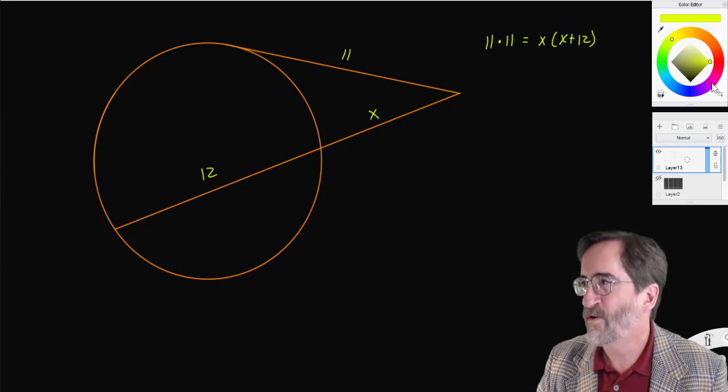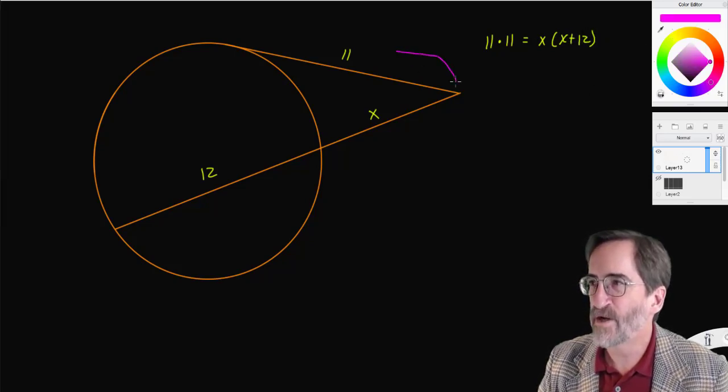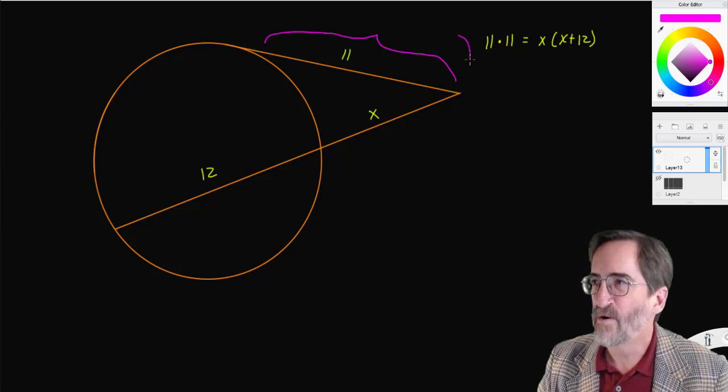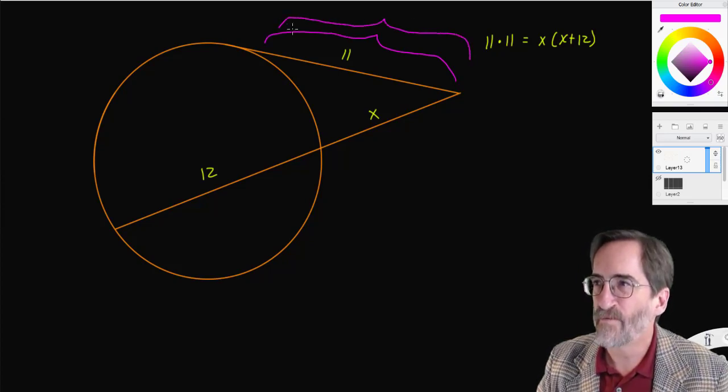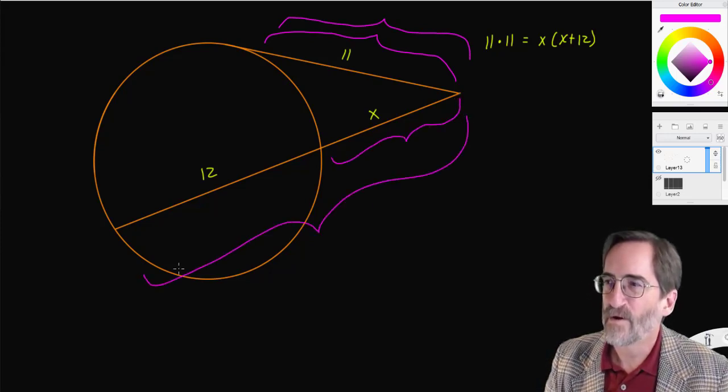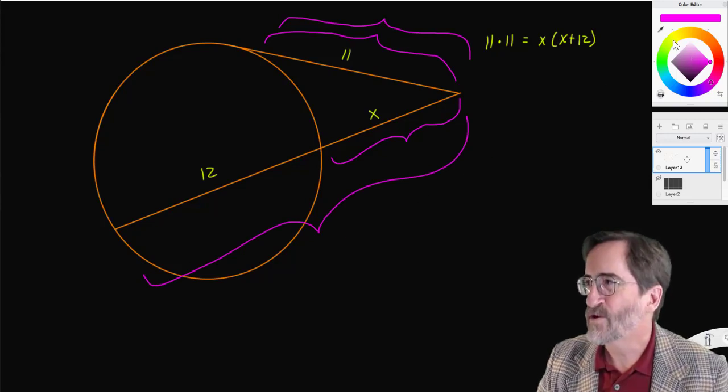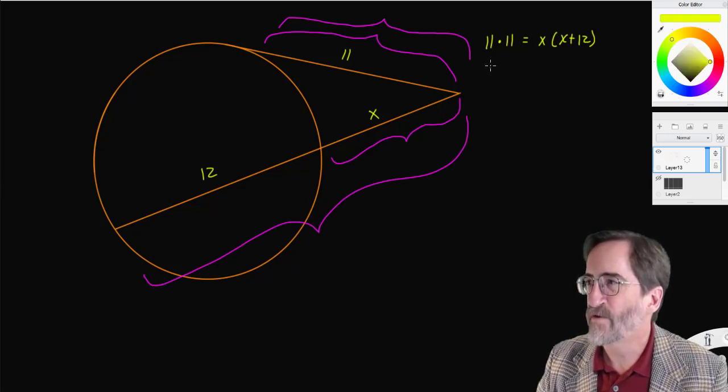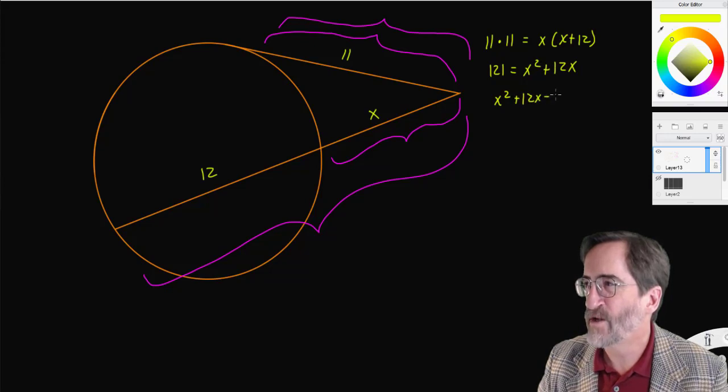So let me reiterate that. It's the outside part times the whole, which are the same thing in this case, equals the outside part times the whole. And we can solve this by distributing: 11 times 11 is 121. x times x is x squared plus 12x. Subtract 121. x squared plus 12x minus 121 equals 0.